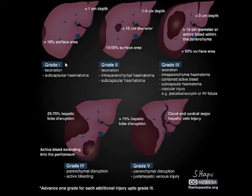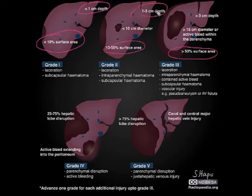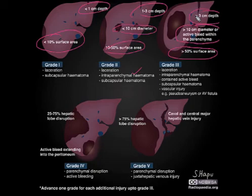Comparing grades 1, 2, and 3: in grade 1 the subcapsular hematoma is less than 10%, in grade 2 it is 10 to 50%, and in grade 3 more than 50%. For laceration: grade 1 is less than 1 centimeter depth, grade 2 is 1 to 3 centimeters, and grade 3 is more than 3 centimeters. Additionally, in grade 2 we have an intraparenchymal hematoma less than 10 centimeters in diameter, while in grade 3 it is more than 10 centimeters and active bleeding within the parenchyma may be present.